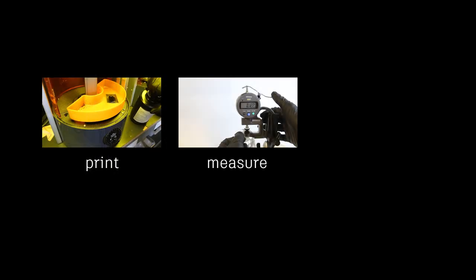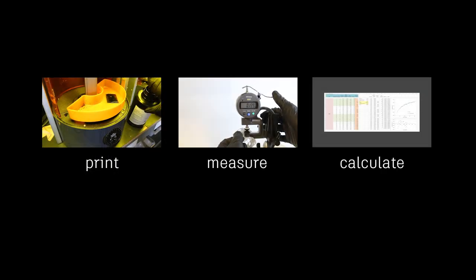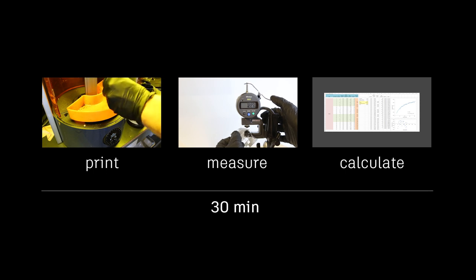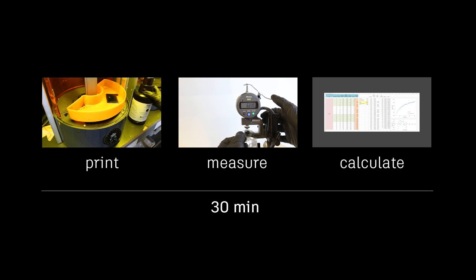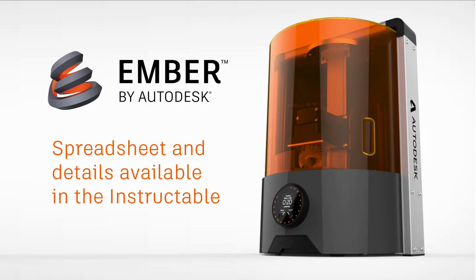Printing the panels, measuring their thickness, and calculating an exposure time takes about 30 minutes on ember. This process works well for a wide range of 3D printable resins. So that's a great idea. Thanks for watching, and please subscribe if you'd like to learn more about research and 3D printing.